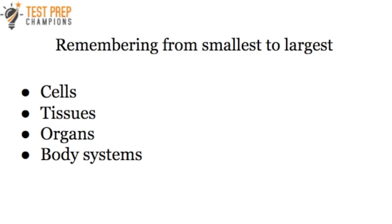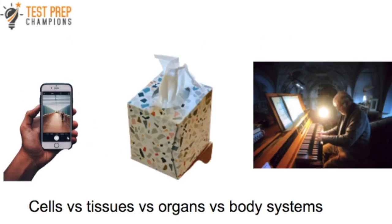Here's a trick: when you hear the word cell, think about a cell phone. And when you hear the word tissues, just picture a box of tissues. What's bigger — a cell phone or a box of tissues? Well, generally, a cell phone is smaller than a box of tissues and can even fit inside the tissue box. That's how you remember that tissues are bigger than cells.